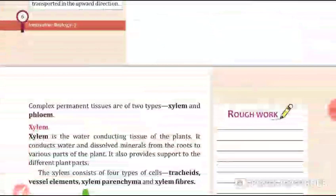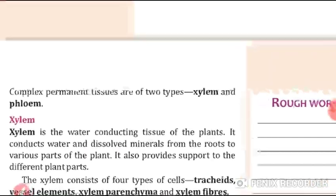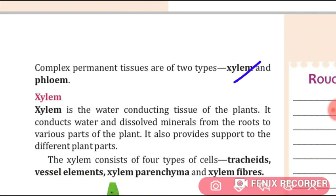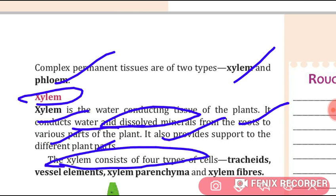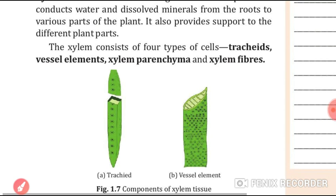Complex tissues are of two types: xylem and phloem. Xylem is the water-conducting tissue of the plant — it conducts water and dissolved minerals from roots to various parts of the plant. It also provides mechanical support to the plant parts.